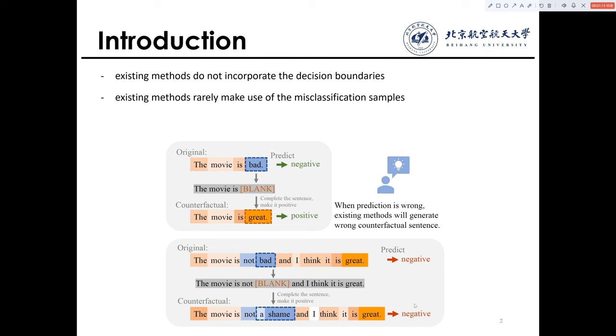In addition, most existing methods only filter final results through label-flipping and there is no optimization of fluency and closeness.